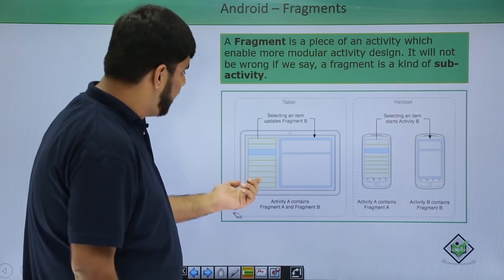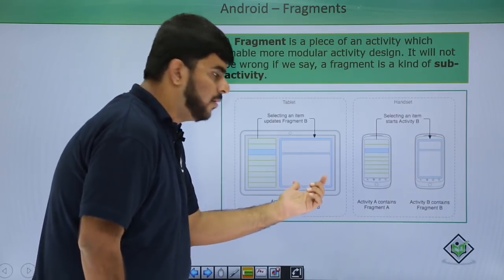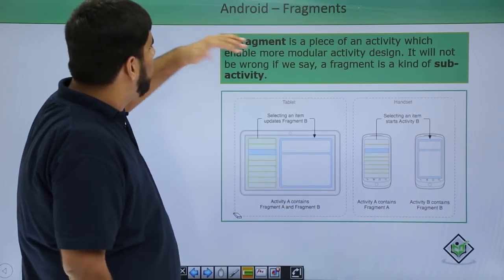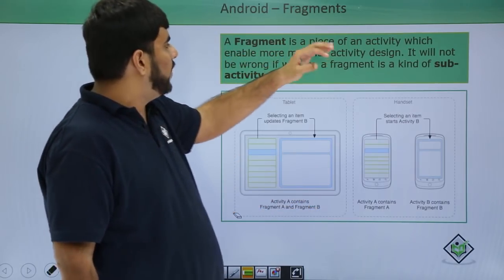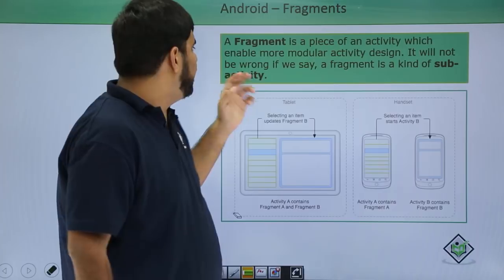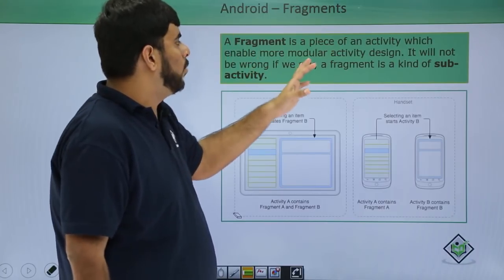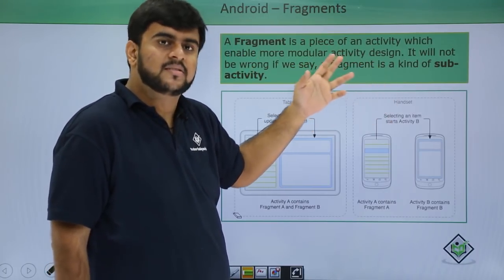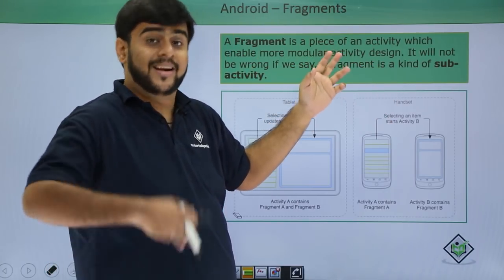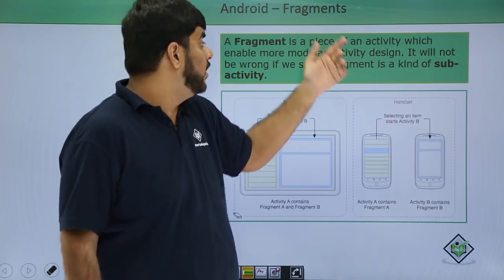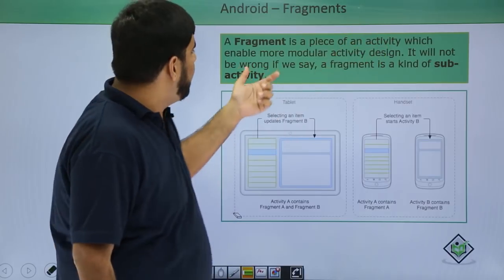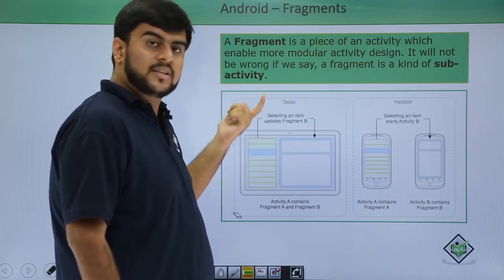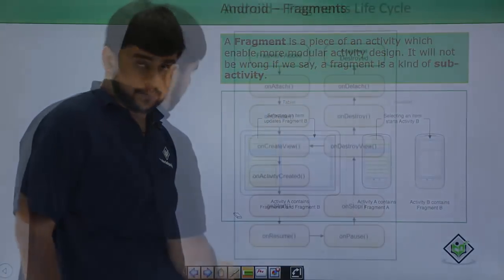The first one being Fragment A and the second being Fragment B. A fragment is a piece of an activity which enables more modular activity design, because it can be controlled from the activity itself. It will not be wrong if we say a fragment is a kind of a sub-activity.